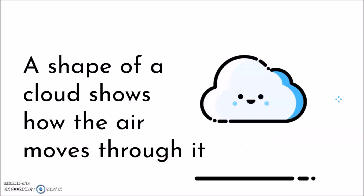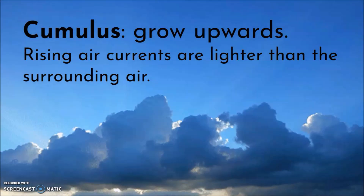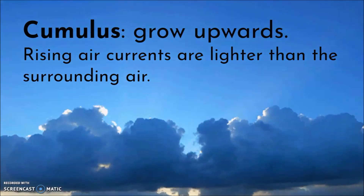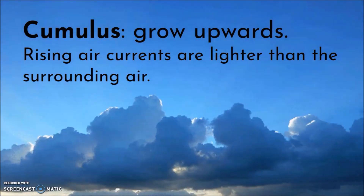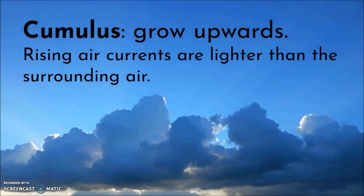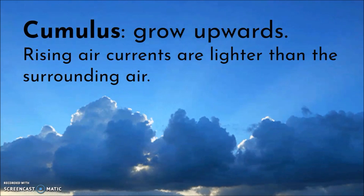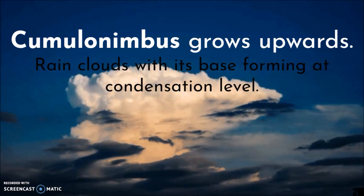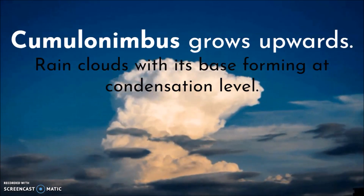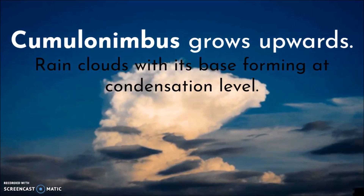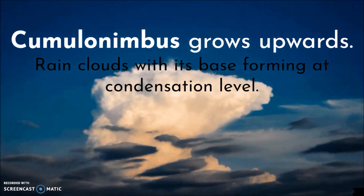The shape of a cloud is going to tell us how the air moves around it. For example, a cumulus cloud — those big fluffy ones that are flat on the bottom — grow upwards. Because of the moisture in the air, condensation lets go of heat, and now the cloud is going to be warmer than the air around it, which causes it to rise. A similar cloud that grows upwards is a cumulonimbus, which is a rain cloud whose base is flat and starts at the condensation level.